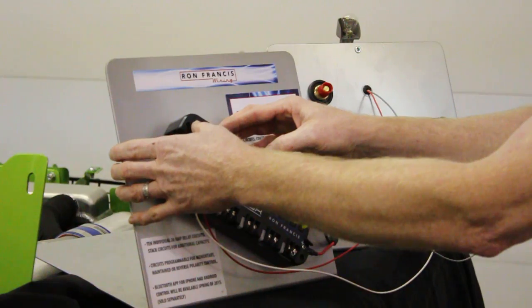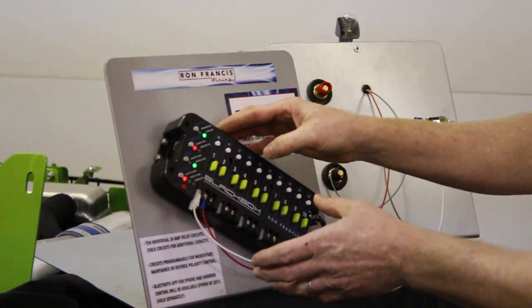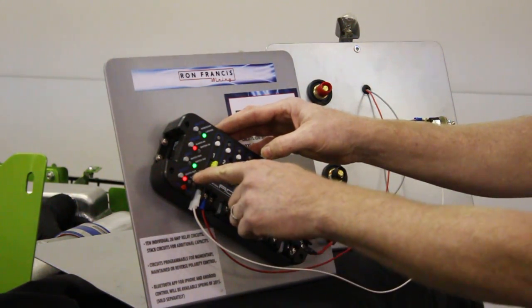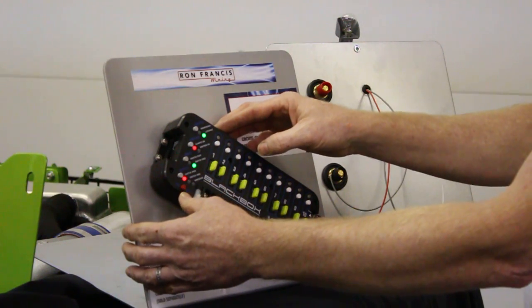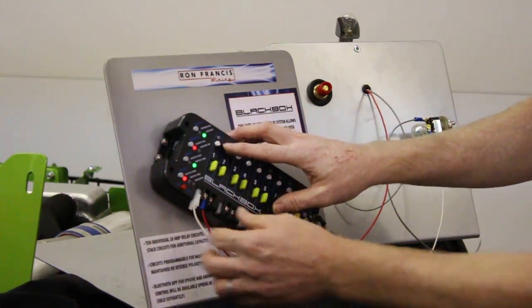For example, let's make it latching, always on, meaning the ignition doesn't have to be on, and we're switching the ground and switching power on the output. Instead of just programming circuit number one, we're going to hit circuits one and two together.